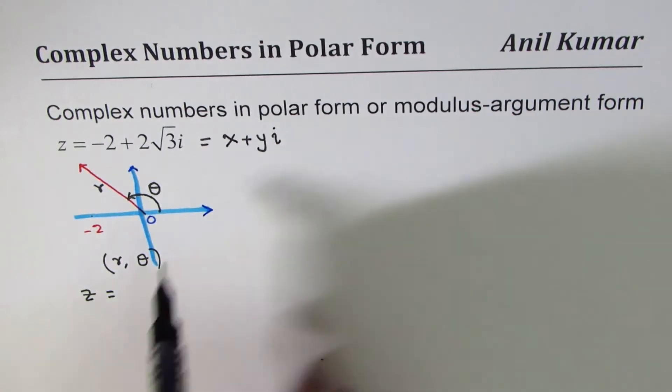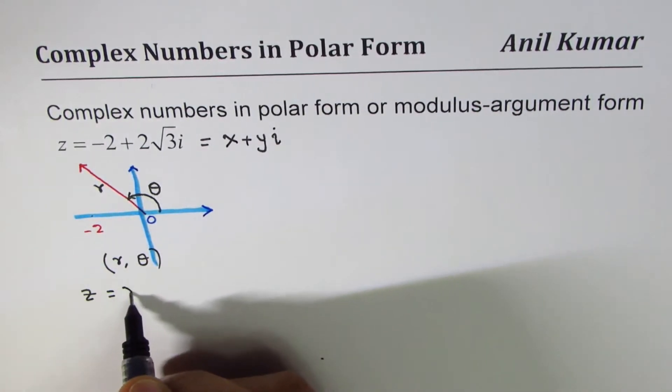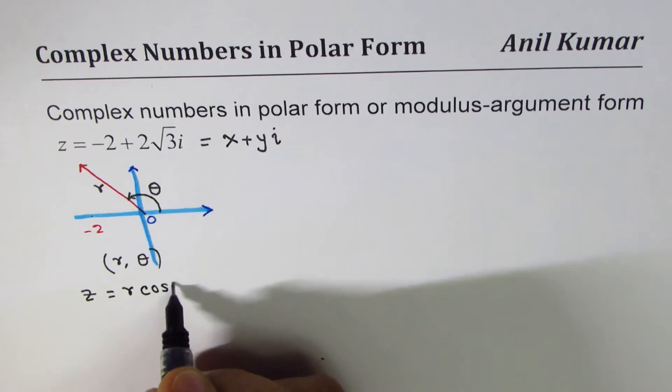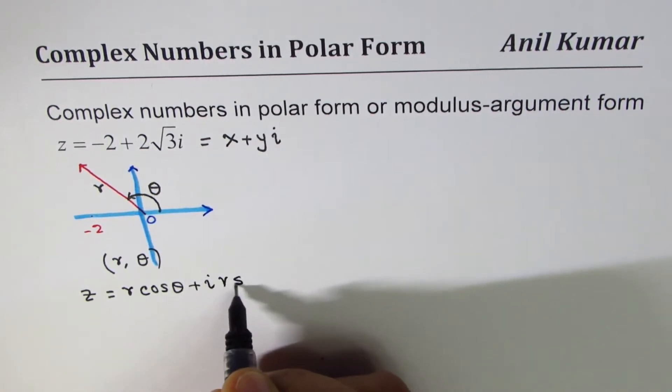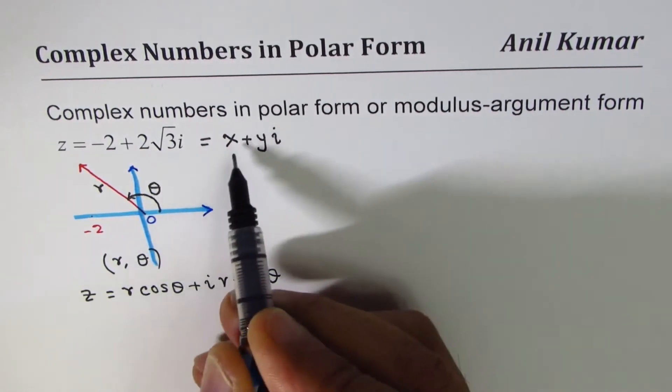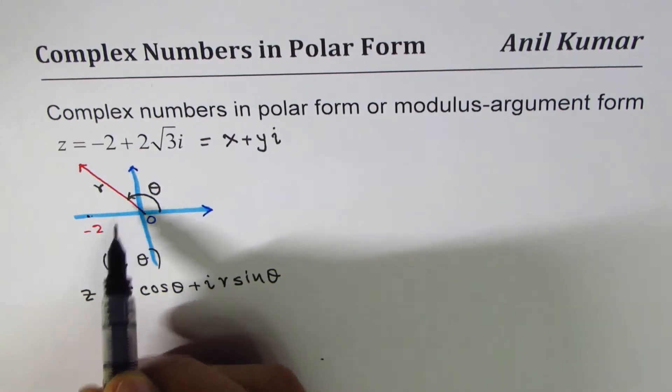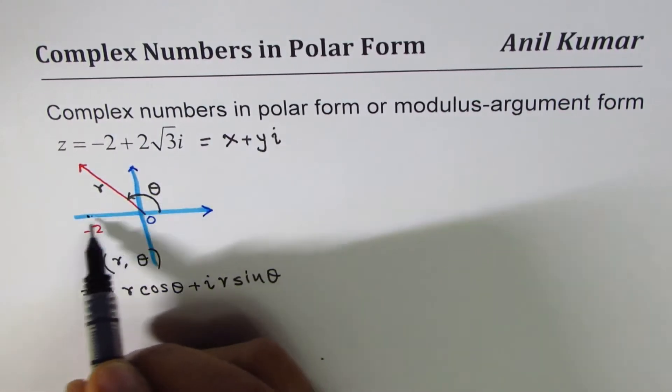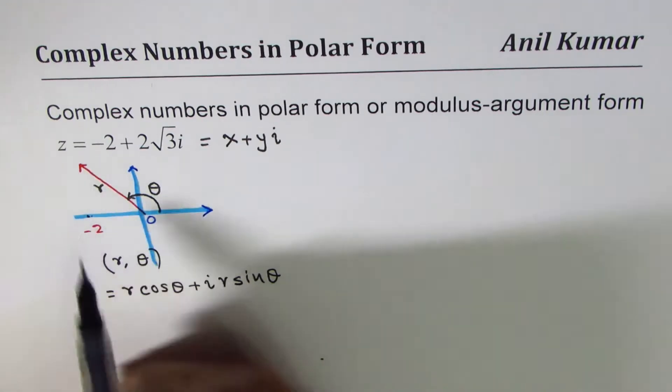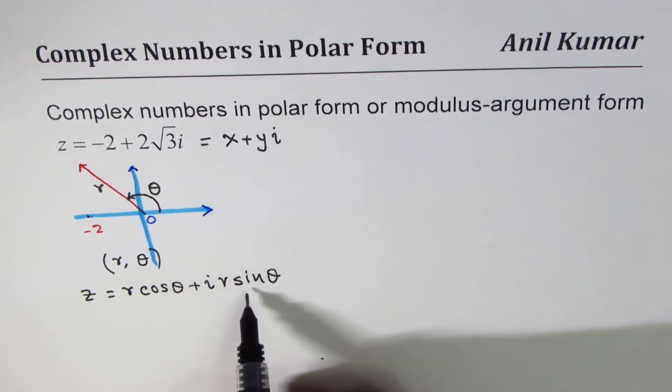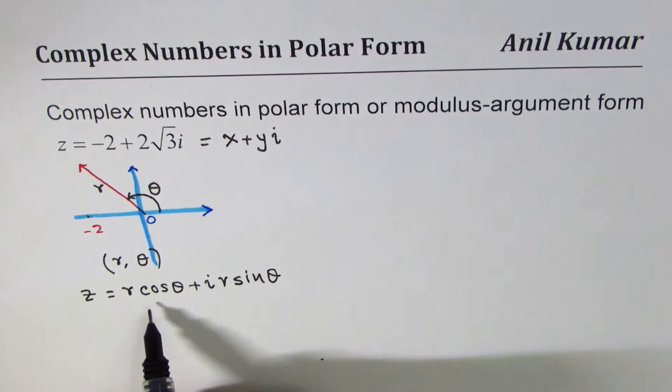The general form for polar will be r cos theta plus i r sine theta. The x value, which is this value, is r cos theta. The y value is r sine theta. So replacing y with r sine theta, x with r cos theta.